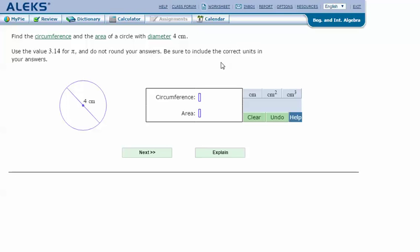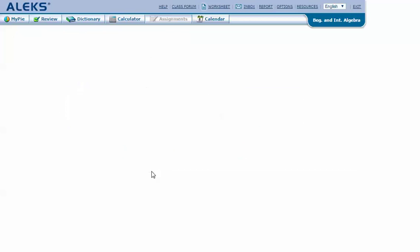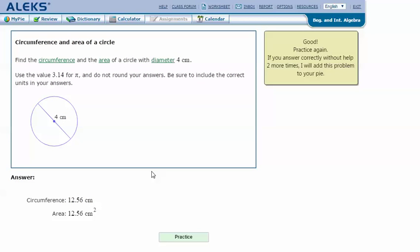In my ALEKS screen, type in the answer that I got in my notes: 12.56 centimeters and 12.56 centimeters squared, and click next. And it says that I got the correct answer. Thanks for watching and don't forget to hit like and subscribe to our John Wood YouTube channel for more math videos.